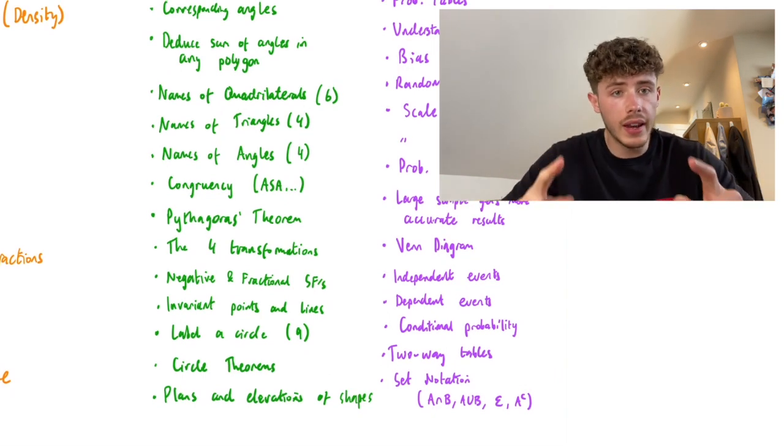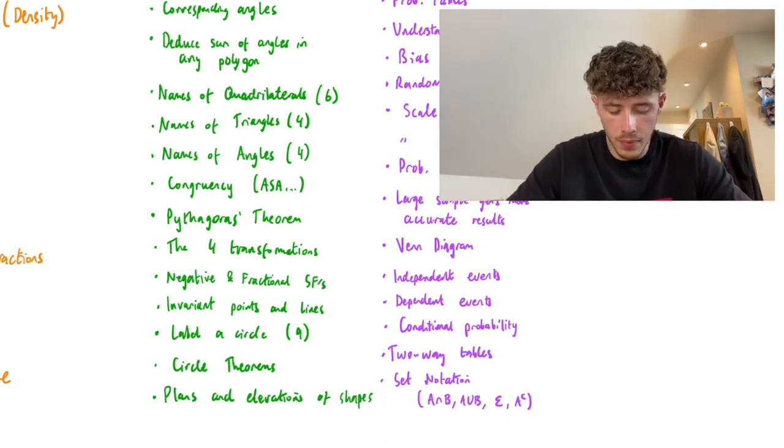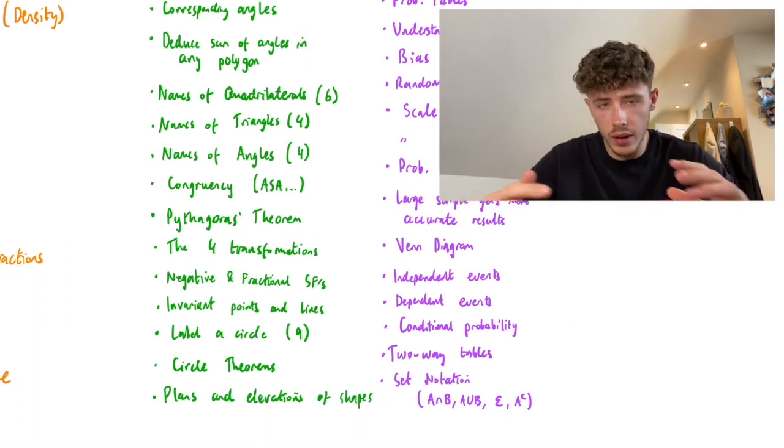Labelling a circle - there's nine labels on a circle that you should know, including the centre, circumference, stuff like that. Circle theorems, seven or eight of those.